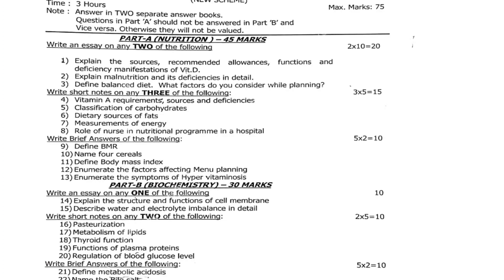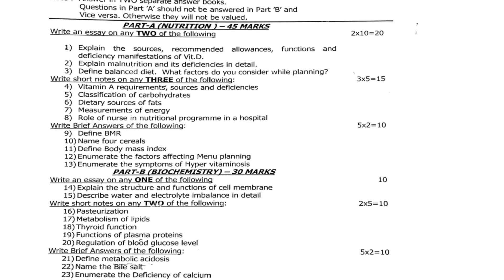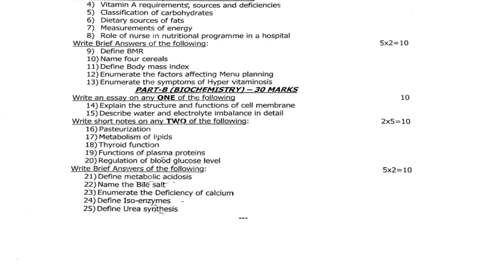Brief answer questions — 9th: define BMR (basal metabolic rate). 10th: name four cereals. 11th: define body mass index. 12th: enumerate the factors affecting menu planning. 13th: enumerate the symptoms of hypervitaminosis. Each question carries two marks — 5 × 2 = 10 marks.